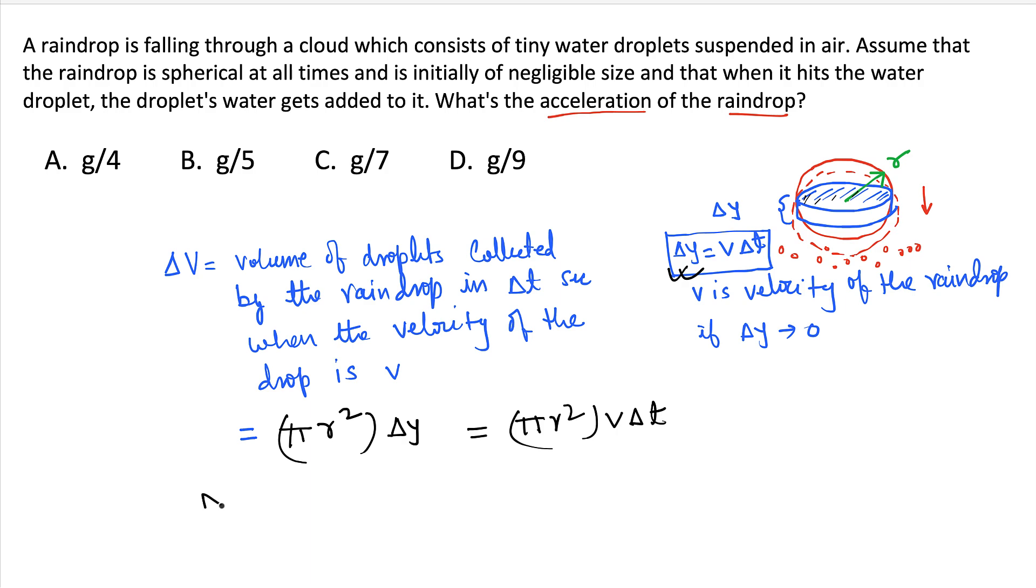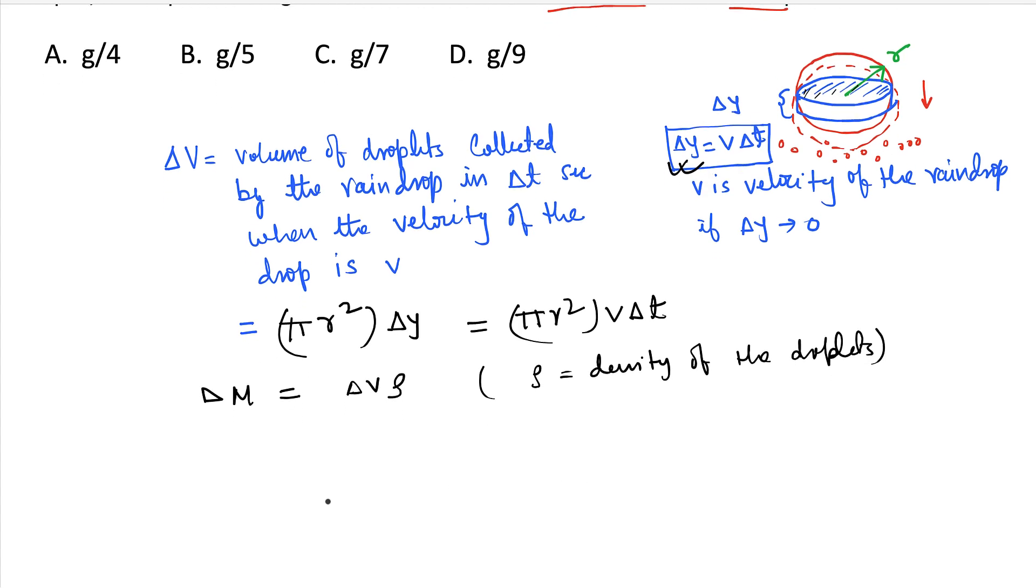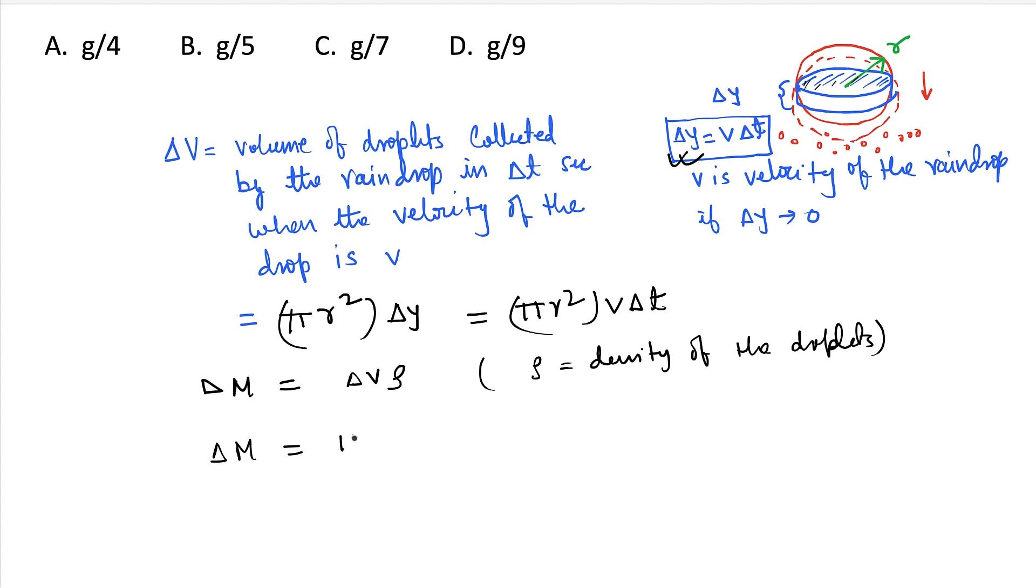And so mass, delta mass collected would be delta V into density. Let's say rho is the density of the droplets. So delta M will be pi R square V rho delta T, which is delta M by delta T is pi R square rho V. V is velocity. So this is the equation for M dot, the rate of change of mass with respect to time.